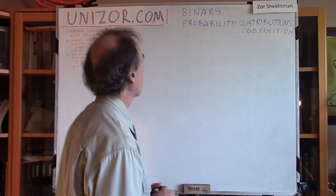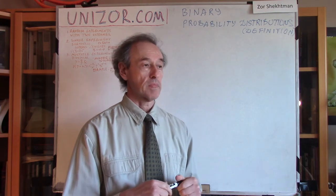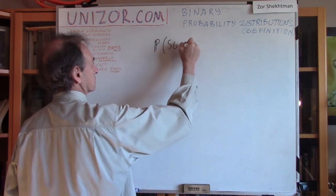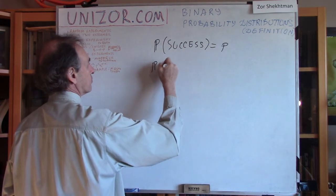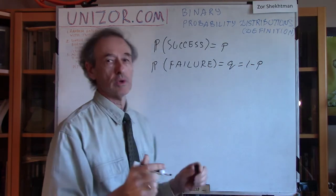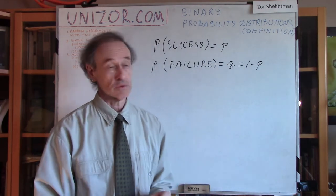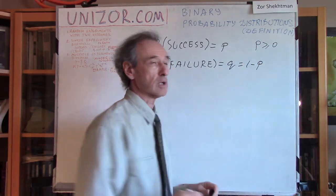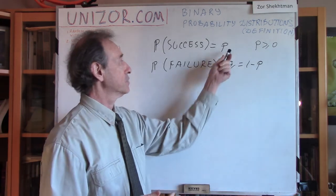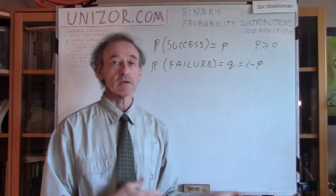We are talking about a single experiment with two results, which we can conditionally call success or failure, and the results have certain probabilities. The probability of success is P, and the probability of failure is Q, which is 1 minus P. There are only two possibilities, so the sum is equal to 1, where P is greater than or equal to 0. For a coin toss with an ideal coin, P equals one half and Q equals one half.